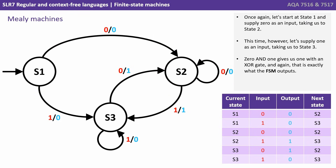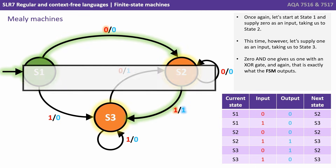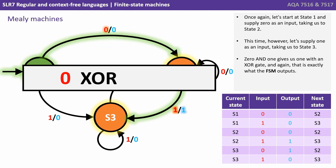Once again, let's start at state one and supply zero as an input, taking us to state two. This time however, let's supply one as an input, taking us to state three. Zero and one gives us one with an XOR gate, and again, this is exactly what the finite state machine outputs.